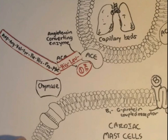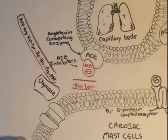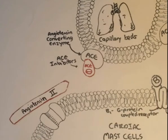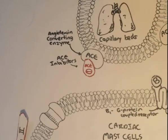Chymase is another enzyme which can convert angiotensin-1 into angiotensin-2. As you can see, chymase reacts with angiotensin-1 and cleaves off the histamine and leucine bond, leaving an octapeptide, also known as angiotensin-2. So angiotensin-2 can now work as its normal function — increasing the heart rate. Here we've got angiotensin-2 leaving the premises.